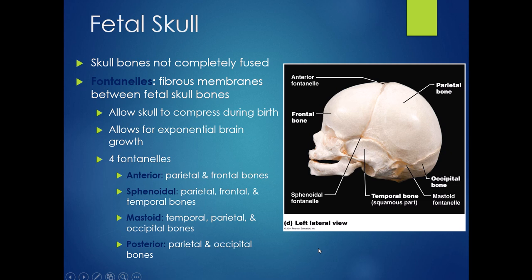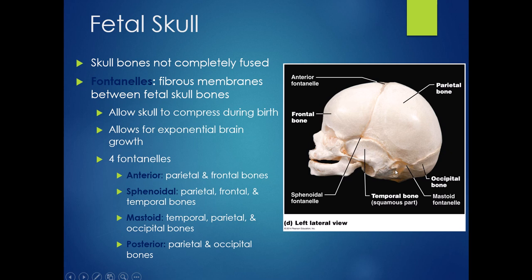Lastly, the fetal skull: fetal skulls have bones that are not totally fused. It still has the overall general shape of an adult skull, but you'll see fibrous fontanelles, which are essentially remnants of the membranous tissue that at one point made up the whole of the fetal skull. The purpose of the fontanelles is twofold: one, it allows the skull to compress during childbirth to make it through the birth canal; and two, it allows for really rapid brain growth, since fetal brain growth late in development is quite exponential. As the brain grows, the unfused skull is able to keep up.